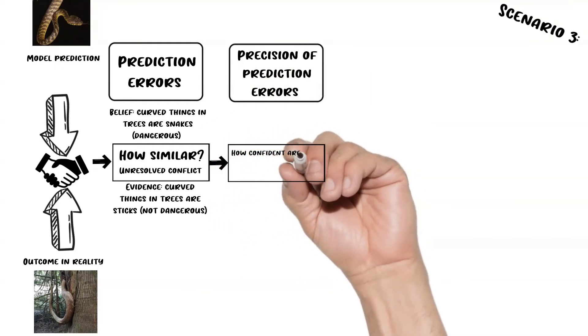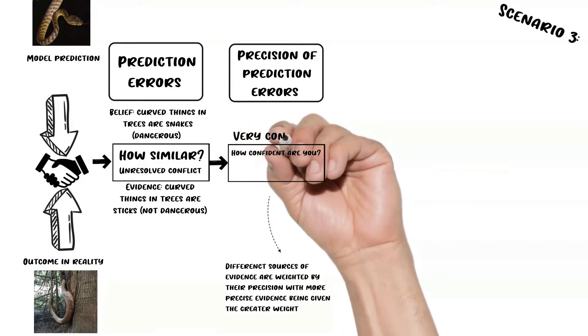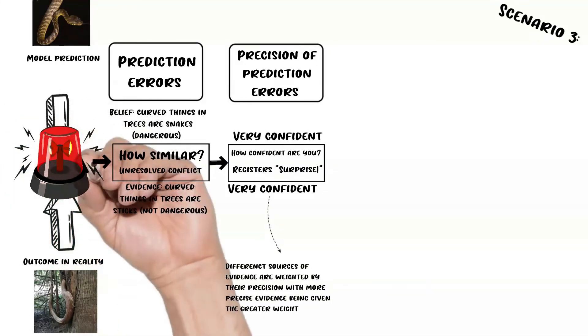Our brain asks: How confident are you that these things aren't similar? Here, the different sources of evidence are weighted by their precision, and the more precise the evidence is, the greater weight it's given. Because this is an unresolvable conflict between high precision sense data and prediction, our brain registers surprise. This is where Bayes' theorem comes into play for this model.